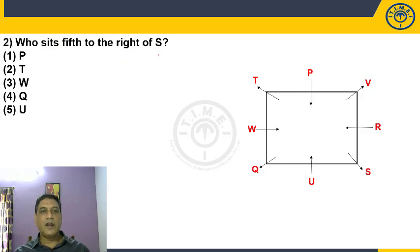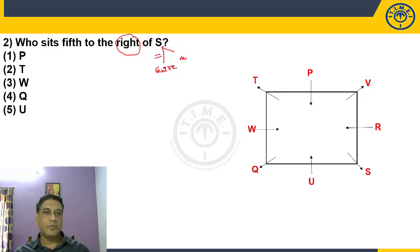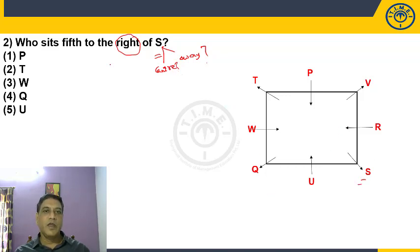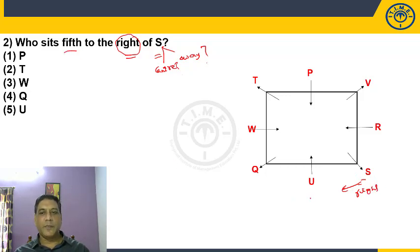Question 2: Who sits fifth to the right of S? Right of S depends on whether S is facing the center or away from the center. S is here, facing away from the center — when facing away, right is the clockwise direction. Counting fifth to the right: first, second, third, fourth, fifth person. So choice 1 is the answer.